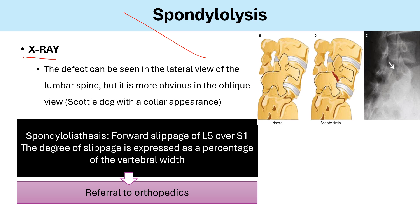The best study to order for cases with suspected spondylolysis is plain x-ray of the back. You can order lateral and oblique views. The normal appearance looks like a dog. The stress fracture appears as a collar on the dog — well known as the Scotty dog with a collar appearance.